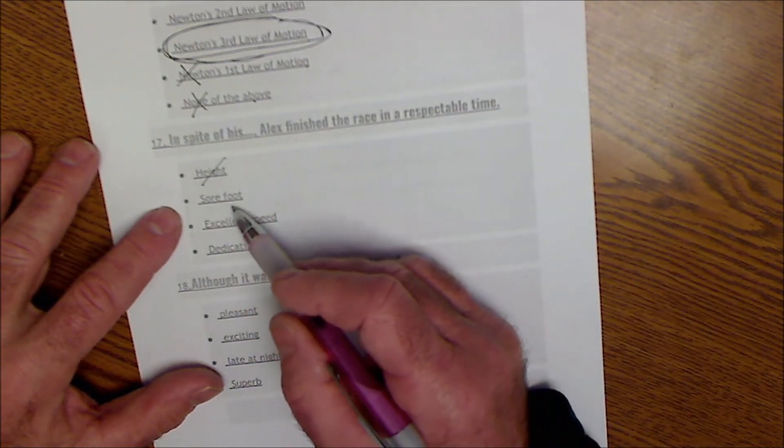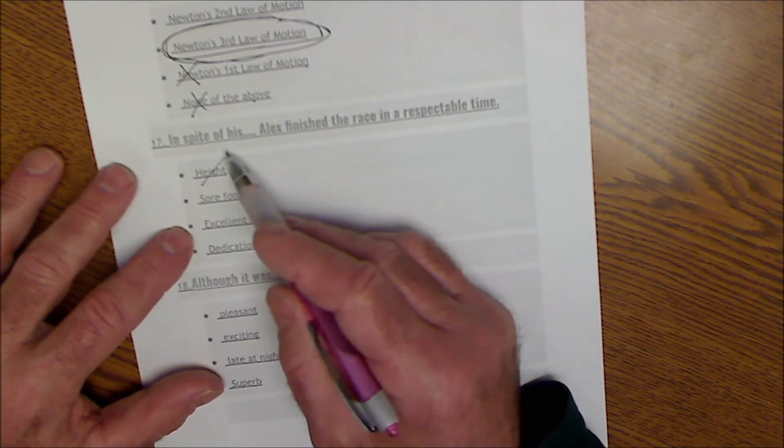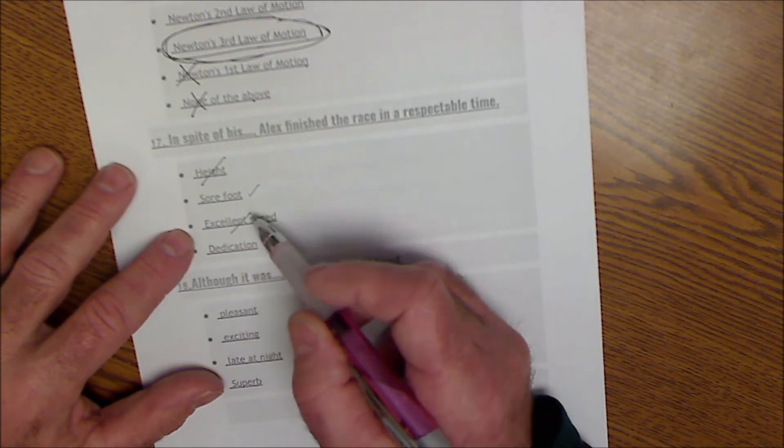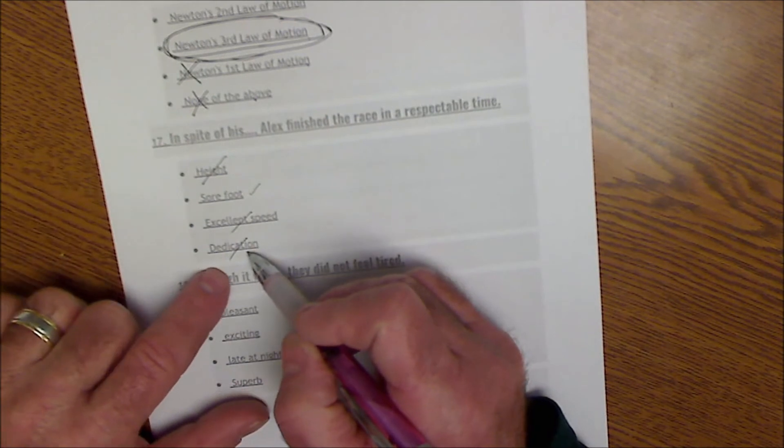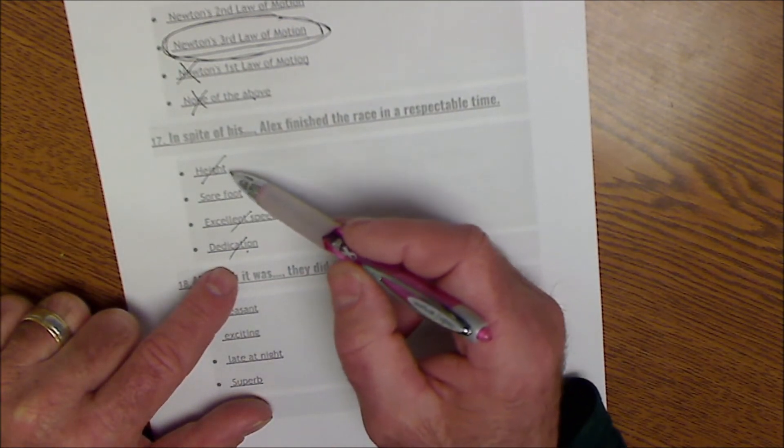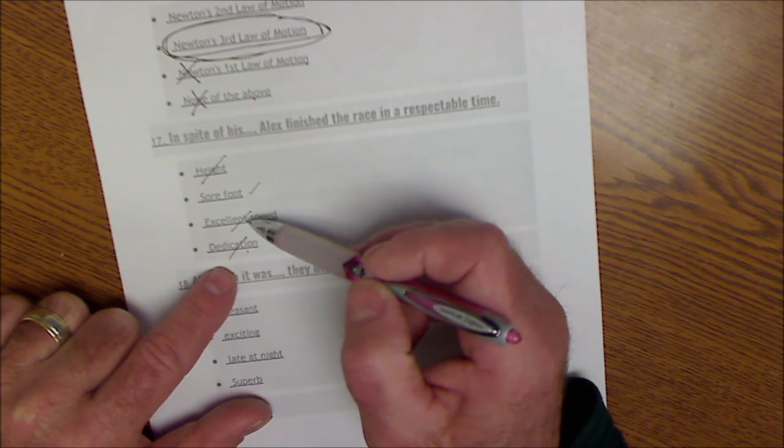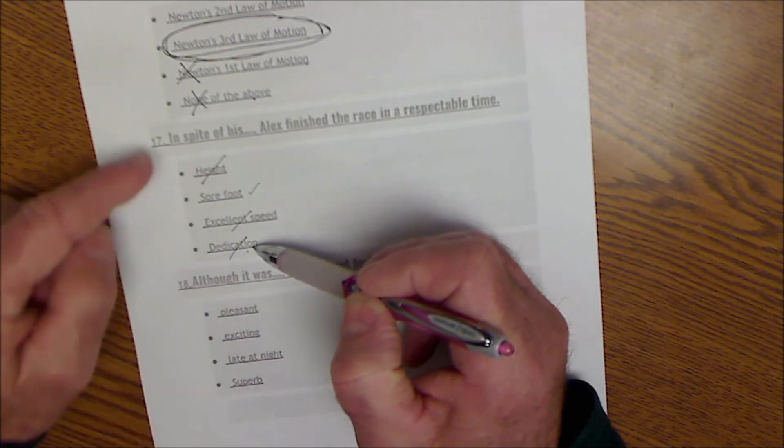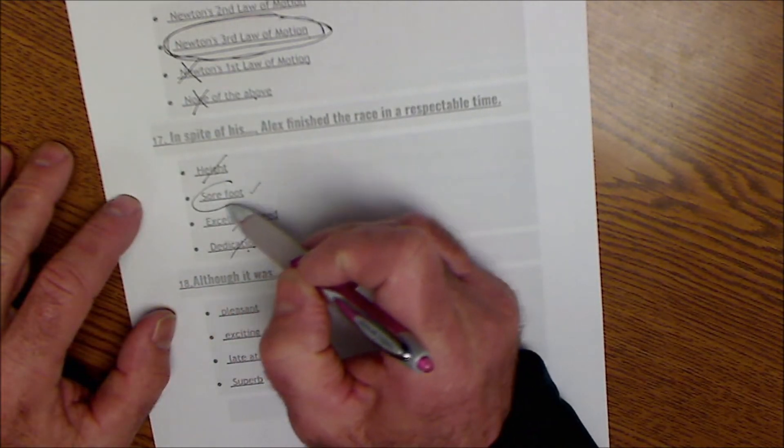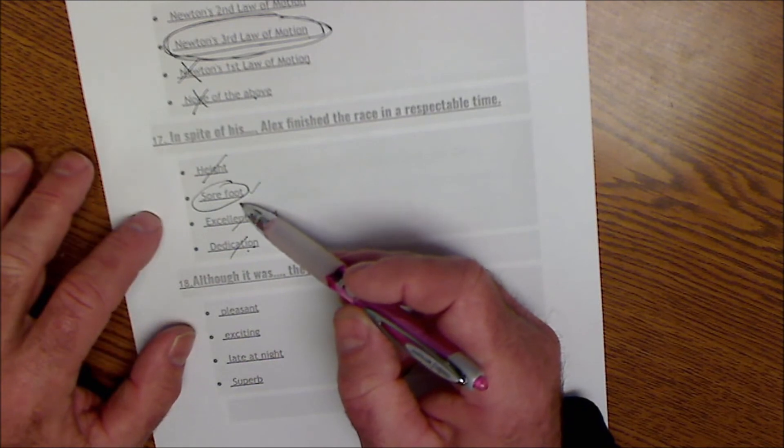In spite of his sore foot, that does make sense. In spite of his speed, that doesn't. In spite of his dedication, that doesn't make sense. So these are all kind of beneficial things. Height, speed, and dedication. So they're all in the same category. A sore foot is a contrary thing. So you could just select that.